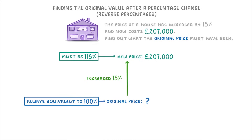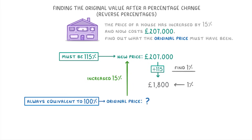This way of doing it is actually really helpful, because it means that we can find out what 1% is by dividing £207,000 by 115 to get £1,800. And because £1,800 represents 1%, all we have to do to find the original price — which is 100% — is multiply £1,800 by 100, showing us that the original price was £180,000.